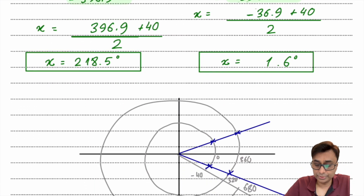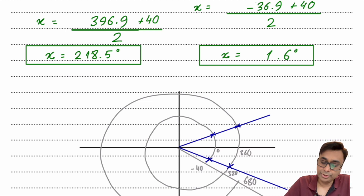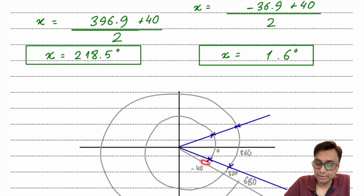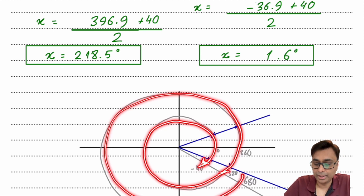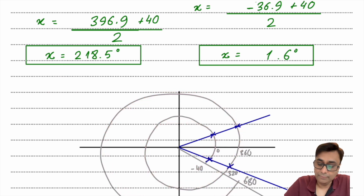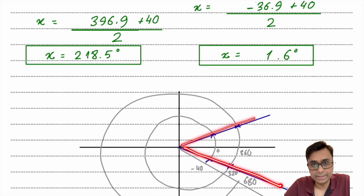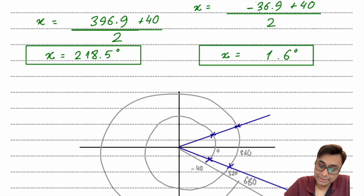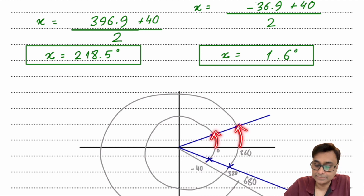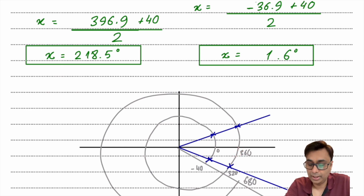An alternative diagrammatic approach places the interval from minus 40 to 680 on a number line and marks where first and fourth quadrant intersections fall every 360°. This visually confirms all four possible answers: 0 plus 36.9, 360 plus 36.9, 0 minus 36.9, and 360 minus 36.9. Both approaches yield the same answers.